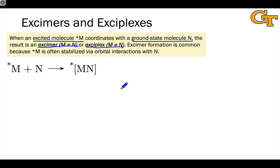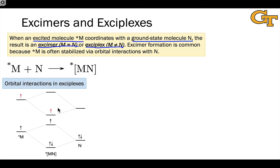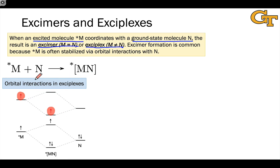Exomer formation is very common — more common in some cases than we give it credit for. For example, exomer formation can be involved in photochemical mechanisms in ways that are sometimes unexpected or unpredictable. One of the reasons that exaplex or exomer formation is common is because the excited state M* is often stabilized through delocalization of the excitation energy, or on a more concrete level, orbital interactions that stabilize the electrons of M*. Here we see that the higher energy SOMO electron is stabilized through an interaction with the LUMO of ground state M. That stabilization corresponds to an energy lowering in the exaplex relative to the separated molecules.